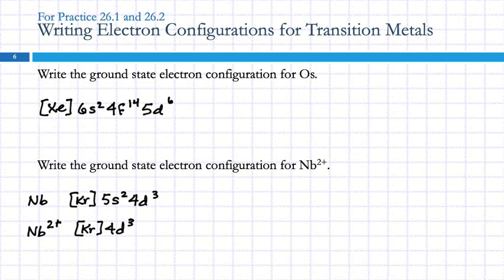This ion has electrons in the d orbitals. The crystal field idea is that the crystal field causes the energy of those d orbitals to split so that they're not all exactly the same energy like they normally are.